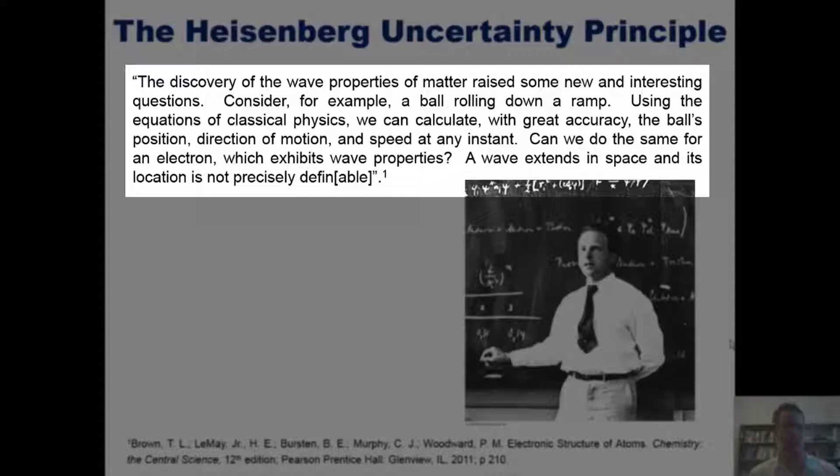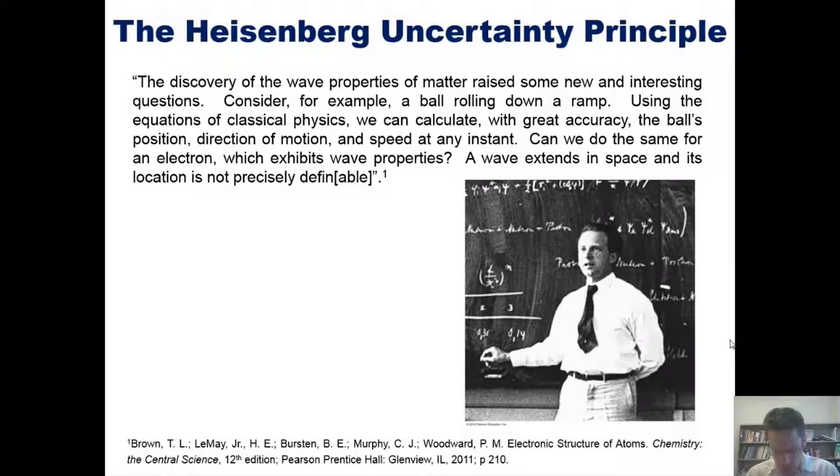Can we do the same for an electron, which exhibits much more significant wave properties? A wave extends in space and its location is not precisely definable. As we consider this question, whether or not we can actually define an electron's position and velocity in space, it brings us to this man right here.